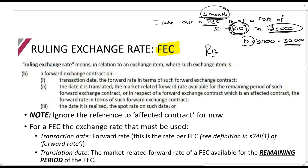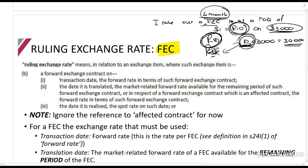It is very important to understand the market-related forward rate. For example, if on 1 November you take out a 4-month FEC at R10 per dollar, you will pay it at end of February. At year-end (December), when you need to calculate the forex gain or loss, you use a market-related forward rate for the remaining period of the FEC.